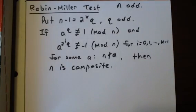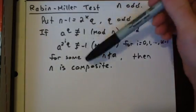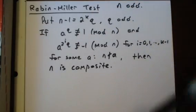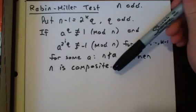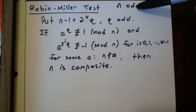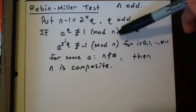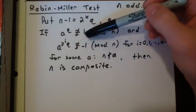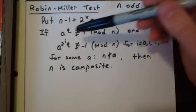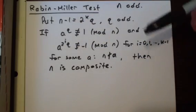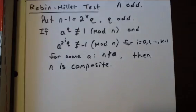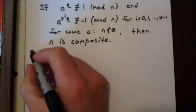This is a powerful test because about 75% of such a will be witnesses to a number being composite. So a lot of times we can very quickly and easily tell that a number is definitely composite. However, this test doesn't ensure that a number is prime. If a number fails these conditions for one a, then it might be prime, and the more different a's that we try, the more sure we can be that the number is prime. So it's a very useful test. Let's go ahead and prove it.